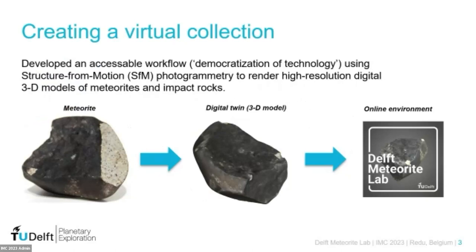It all starts with the real object. Taking the Bosj en Waterland meteorite as an example — through photogrammetry, an imaging process I'll illustrate shortly, we can create a digital twin, a 3D model, which we host online on Sketchfab, where we offer these high-fidelity, high-resolution 3D models that people across the world can use. We focused specifically on structure-from-motion photogrammetry, taking images to generate a 3D model with the right software, because it's a very accessible approach that doesn't require expensive hardware.